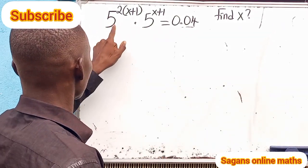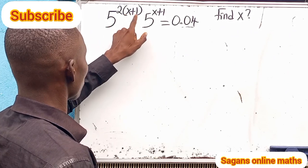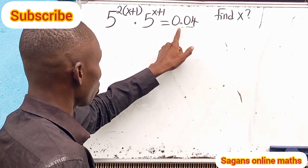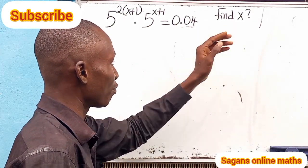Now look at what we're doing. We have 5 raised to -2(x+1) multiplied by 5 raised to -(x+1) equals 0.04. We are asked to find the value of x.